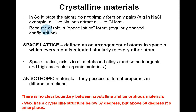Crystalline materials: in solid state, atoms do not simply form pairs. For example, in NaCl, all positive sodium ions attract all negative chlorine ions. Because of this, a space lattice forms — a regularly spaced configuration defined as an arrangement of atoms in space where every atom is situated similarly to every other atom. Space lattices exist in all metals and alloys, and also in some inorganic and high molecular organic materials. Anisotropic materials possess different properties in different directions. There is no clear boundary between crystalline and amorphous materials — wax has a crystalline structure below 37°C but is amorphous above 50°C.